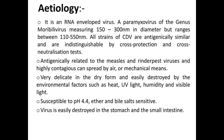The etiological agent of canine distemper is an RNA enveloped virus belonging to the Paramyxoviridae family, genus Morbillivirus, measuring 150 to 300 nanometers in diameter with a range of 110 to 550 nanometers. All strains are antigenically similar and indistinguishable by cross-protection and cross-neutralization tests. Notably, canine distemper virus is antigenically related to the measles and rinderpest viruses — a frequently asked exam question.